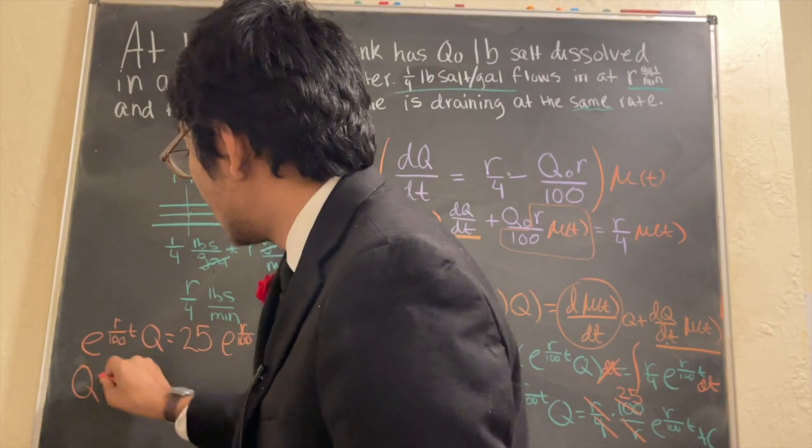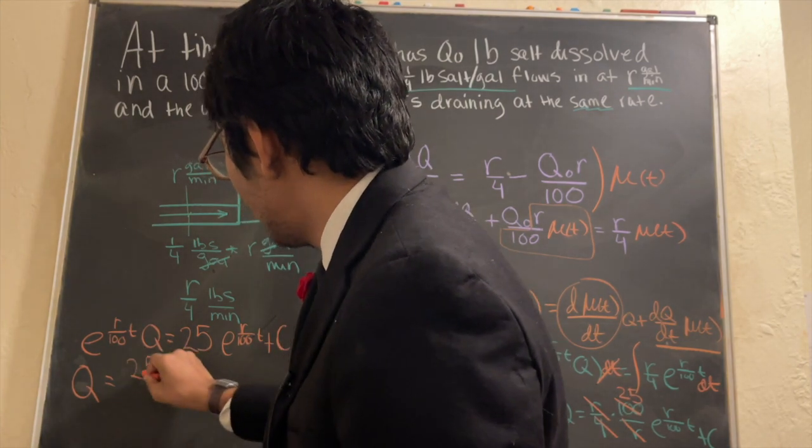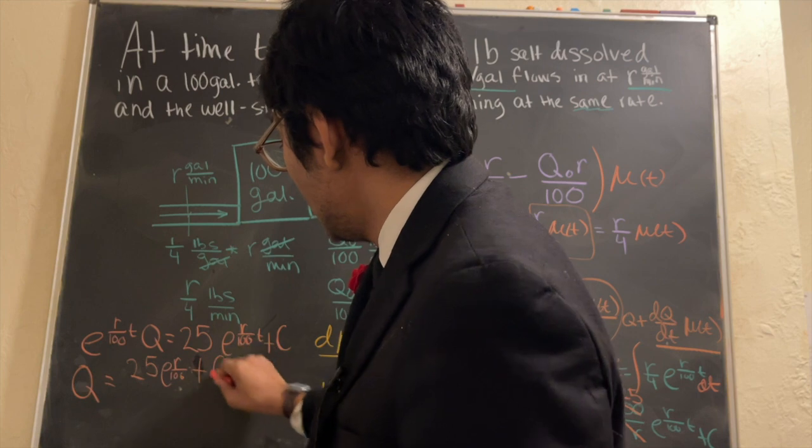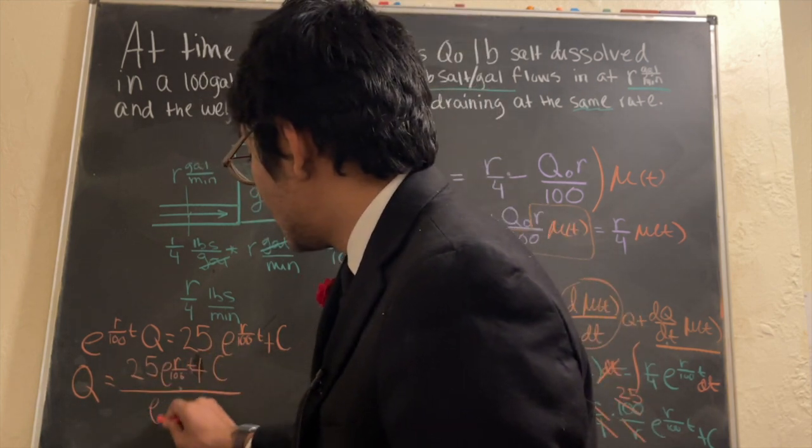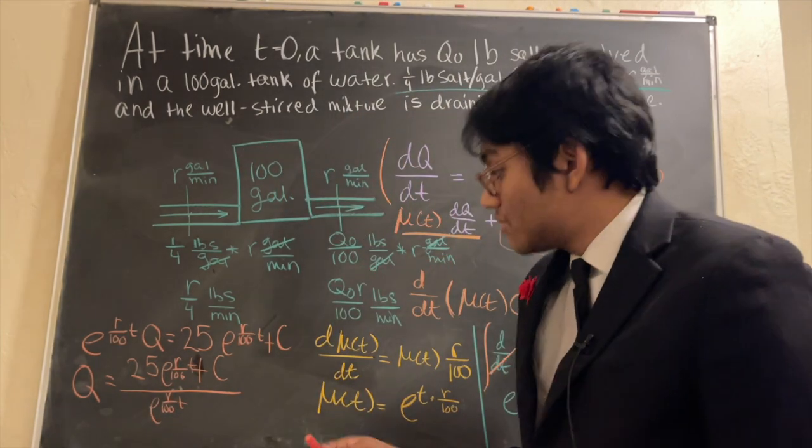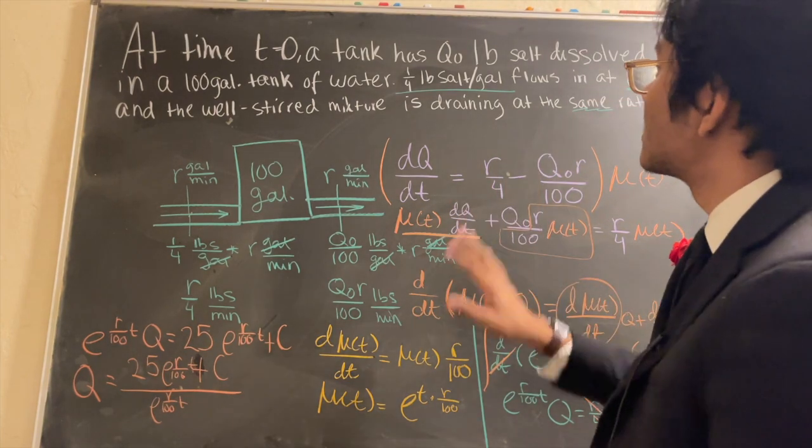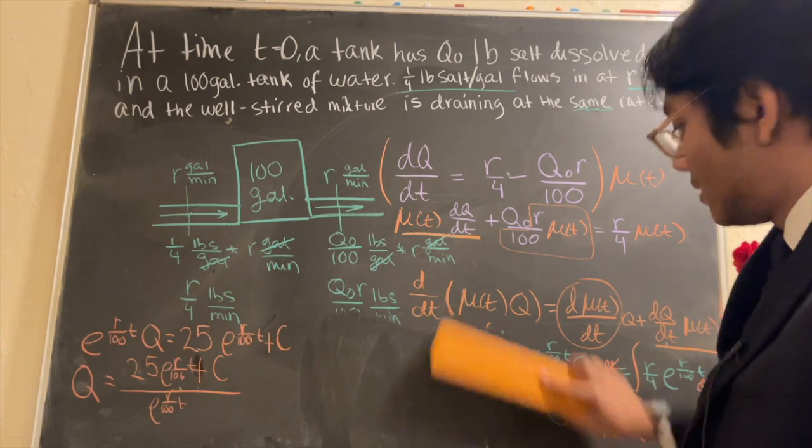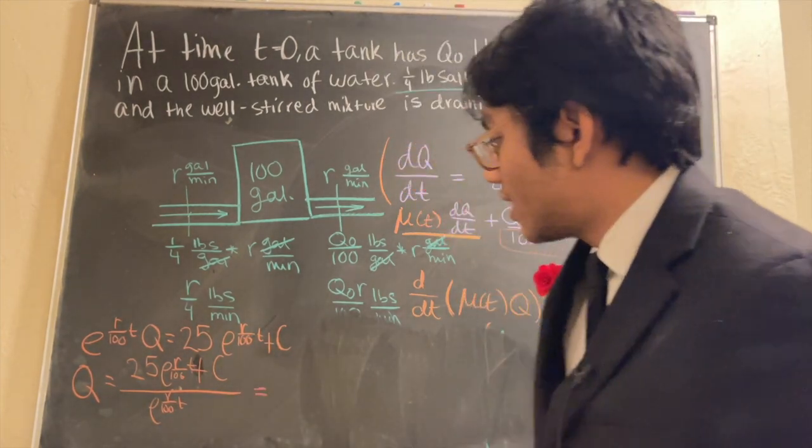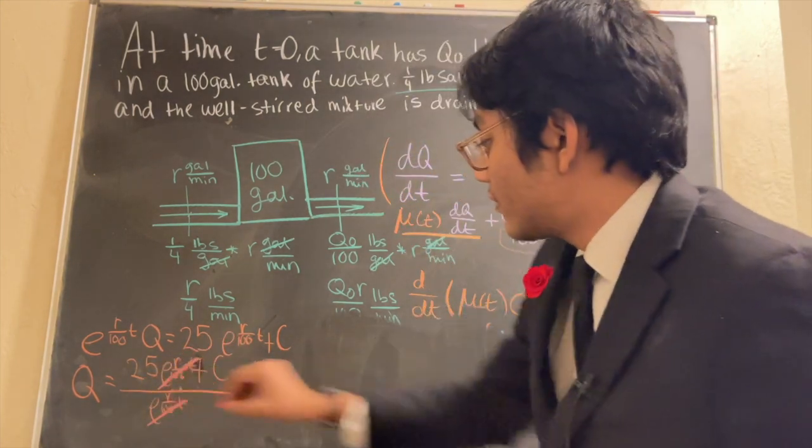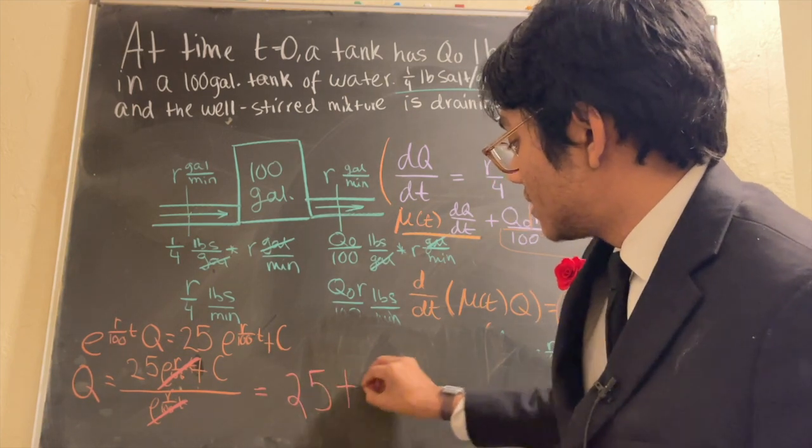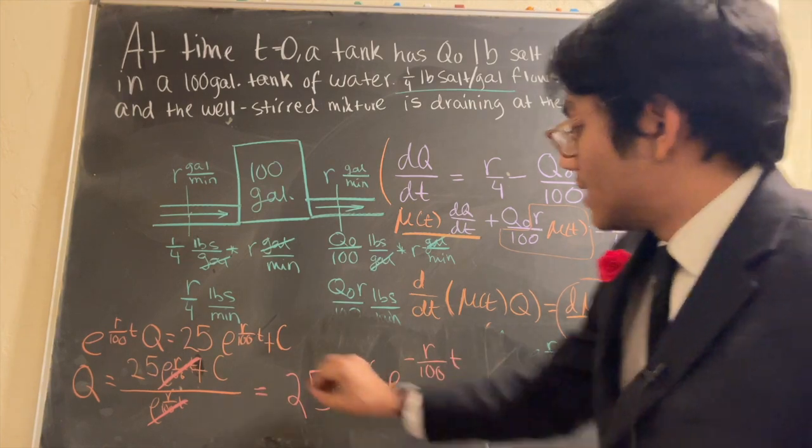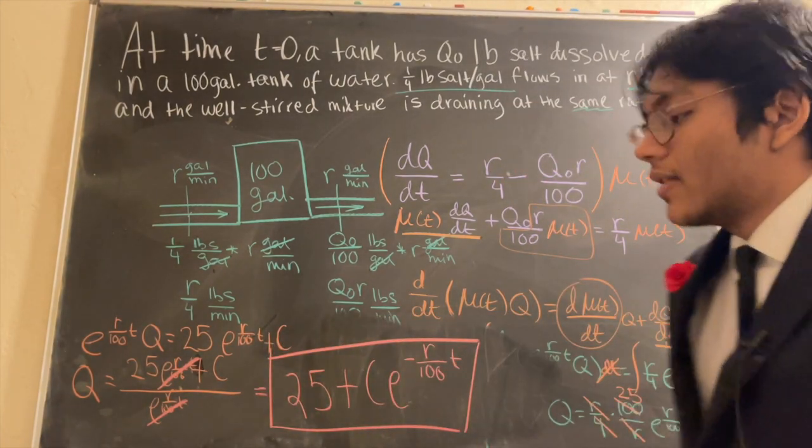And so divide both sides by e to this. So I will be left with 25 plus c all over e to the r over 100 t. And now I can, if I want, simplify this even further. Let's make some space for our final answer here. So now I can rewrite this, simplify it to my final answer, which will be, these two guys cancel out for this term at least, 25 plus c times e to the minus r over 100 t. And that folks, ladies and gentlemen, is the solution for this differential equation.